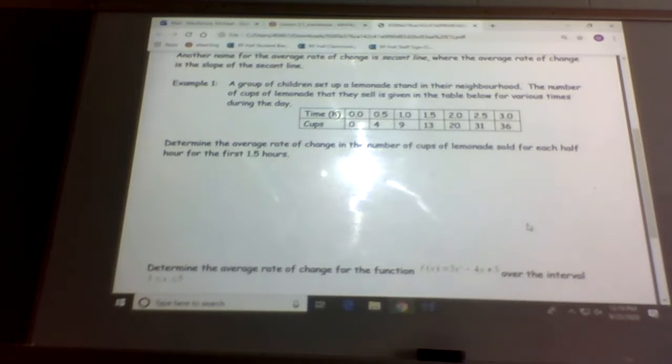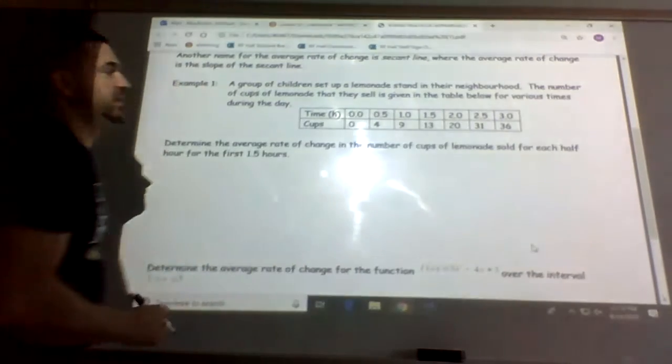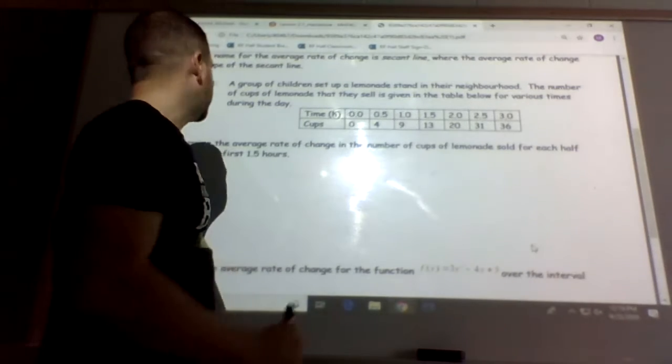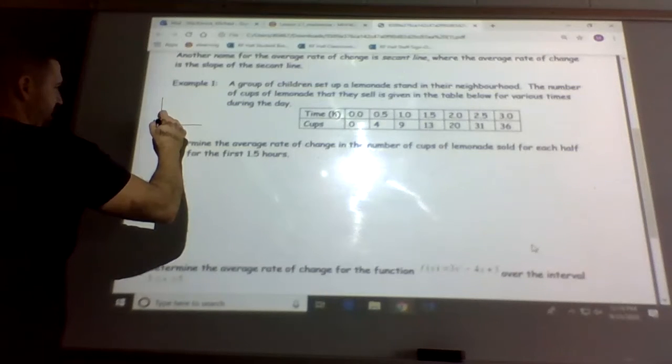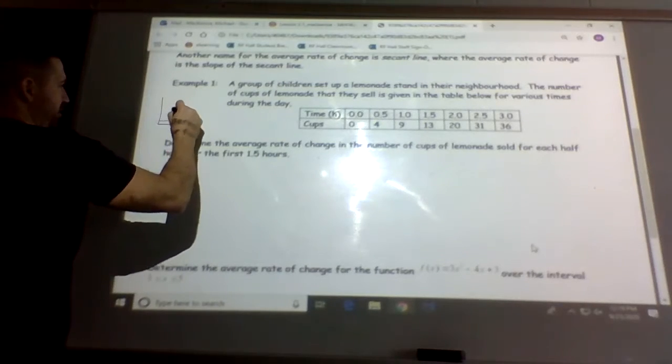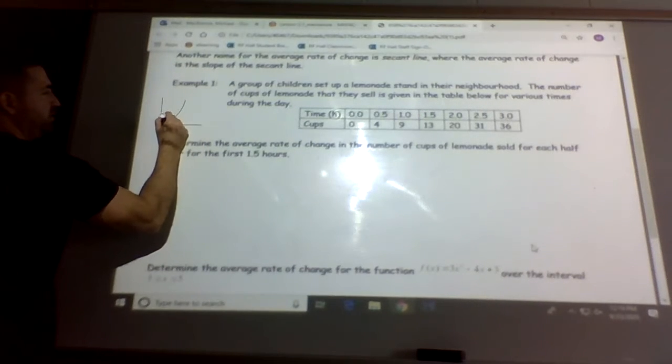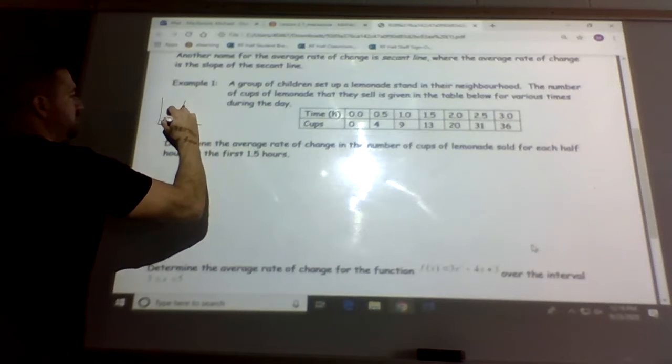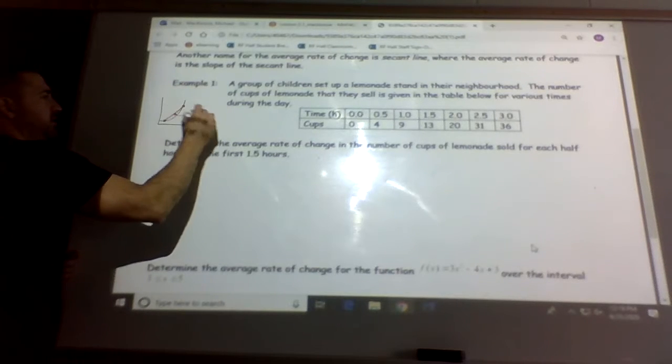Alright, I think I forgot something at the top there. Another name for the average rate of change is the secant line, where the average rate is the slope of the secant line. So a secant line could look something like this. Say we had some sort of parabola or exponential function. So when we do an average rate of change, we take this point and this point and we find the slope. So this would be called a secant line.